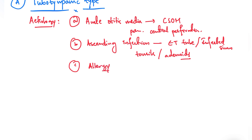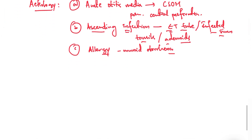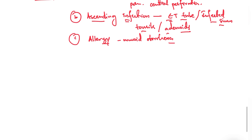Allergy to ingestions like milk, eggs, or fish can cause CSOM. In this condition there will be persistent mucoid otorrhea. So the etiology includes: sequela of acute otitis media causing permanent central perforation, ascending infection from the Eustachian tube, infected sinuses, tonsils, or adenoids, or allergy.